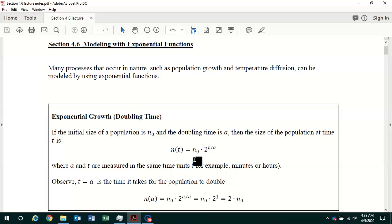If we evaluate this function at t equals a, we have n of a equals n sub zero times 2 to the a over a power. Well, a over a is equal to 1, and 2 to the first power is just 2. So we have 2 times n sub zero. After a units of time, the size of the population is twice its initial size.